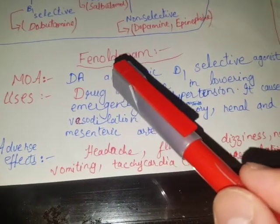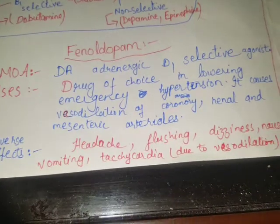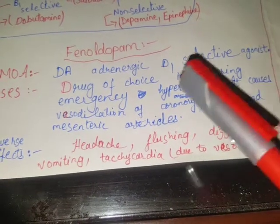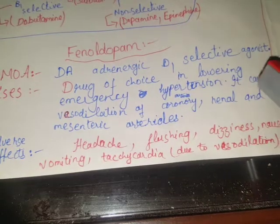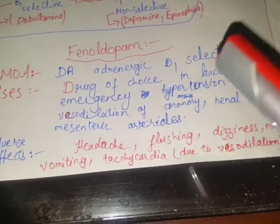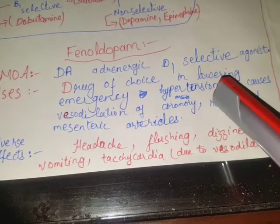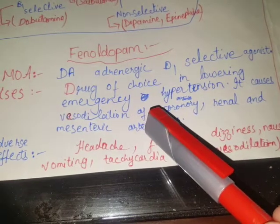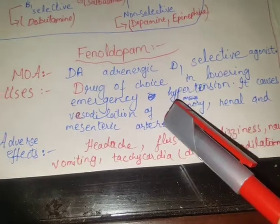One use of fenoldopam is that it is the drug of choice in lowering emergency hypertension. It causes vasodilation of the coronary arteries, renal arterioles, and mesenteric arterioles. Therefore, blood flow to the heart, kidneys, and mesenteric arterioles — that is, the GIT — is not decreased.